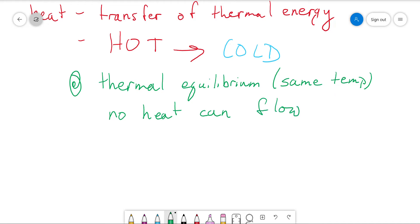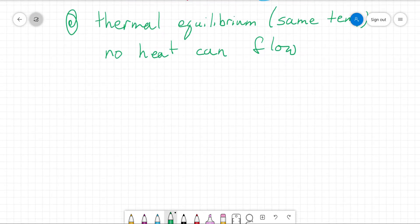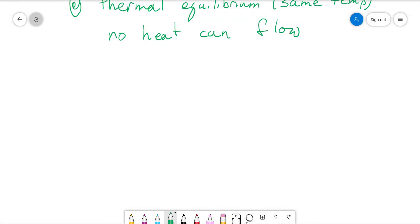Thermal equilibrium - that is to say, same temp - no heat can flow because there is no hot and there is no cold. They're the same temperature, and that'll be key in probably the next video when we'll talk about some example calculations of this stuff.